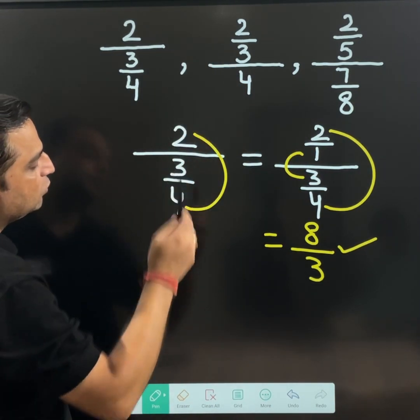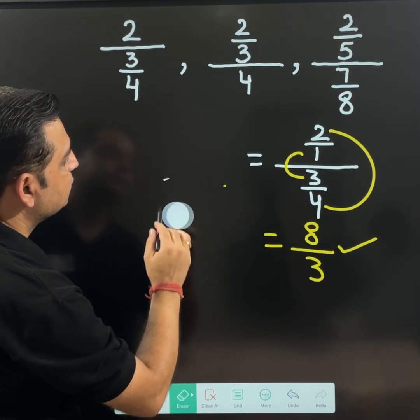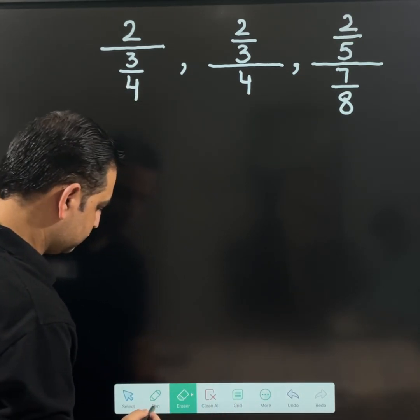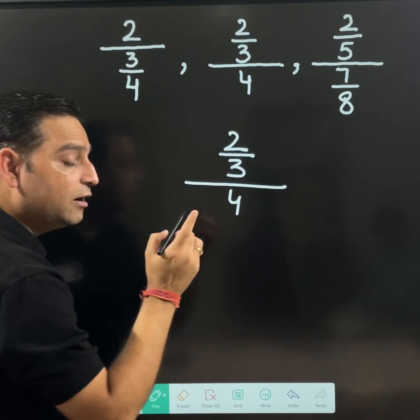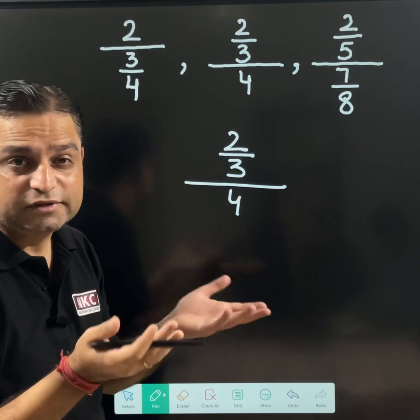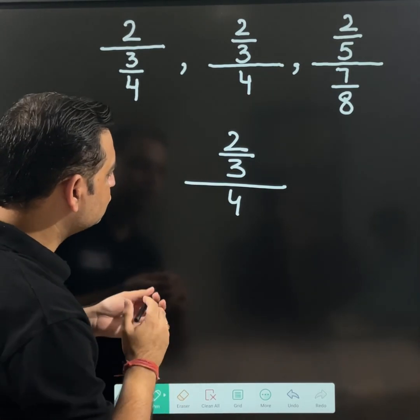Now the last example, 2 over 3. Let us try to do that. 2 over 3 then divided by 4. 2 over 3 divided by 4. Now few students do mistake. They multiply this 4 with 2. That is a mistake then. You cannot multiply 4 with 2. What you should do now.